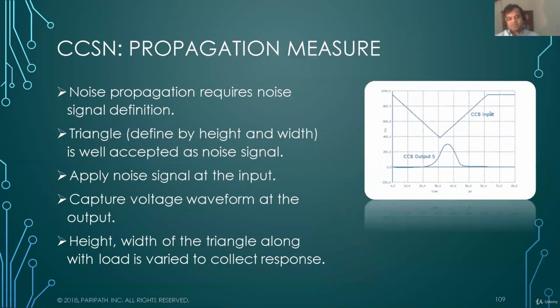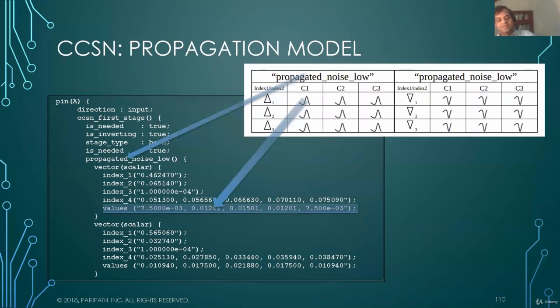Propagation measure. Noise propagation requires noise signal definition. Triangle defined by height and width is well accepted as a noise signal. There are other methods of specifying the noise signal. We use triangles or anything else specified by the user. Apply noise signal at the input. Capture voltage waveform at the output. And that's your noise propagation measurement.